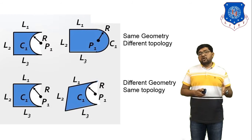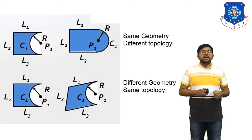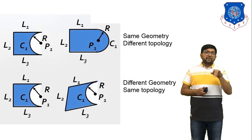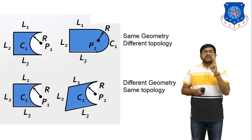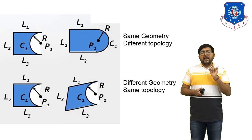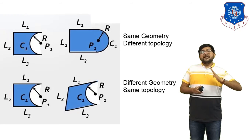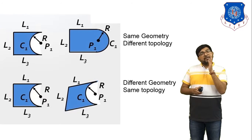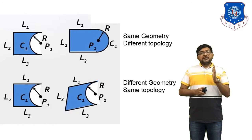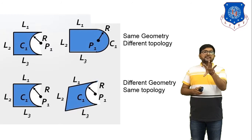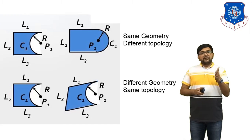We have to understand geometry and topology based on this diagram. The first diagram indicates same geometry but different topology. In the first figure you can observe three straight lines L1, L2, L3, one arc capital R, one point P1, and center C1. Same geometry means the shape and dimension of all entities are same, but the top view or front view of the object are different — indicating same geometry but different topology. The distance of L1, L2 and L3 in both figures are same, but the shape of the objects are different.